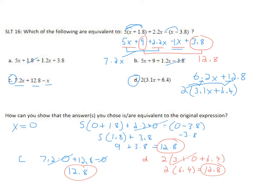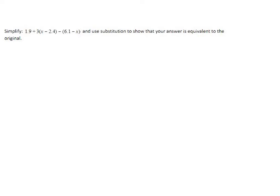This is another simplifying problem, so let's get started. I'm going to do some distributing here and here. I still have my 1.9, and when I distribute the 3 I have plus 3x, and 3 times negative 2.4 is going to be minus 7.2. Then distributing the subtraction gives me minus 6.1, and minus a minus x gives a plus x.